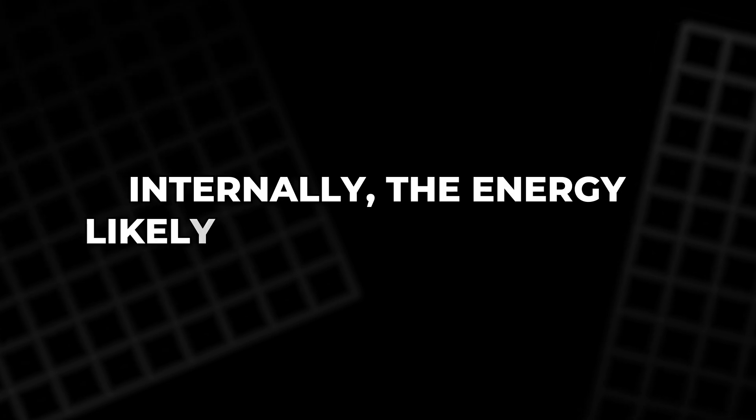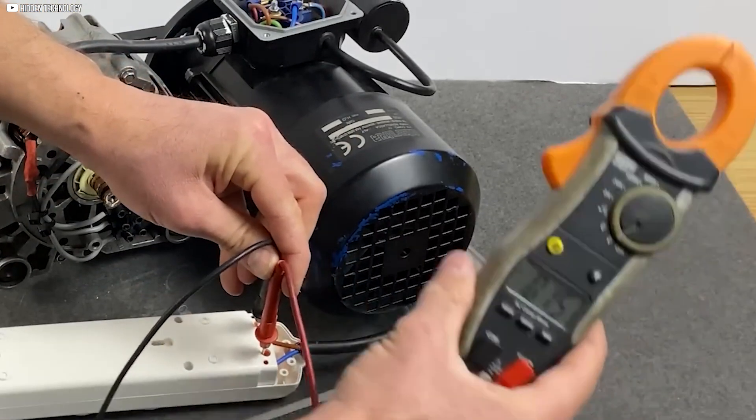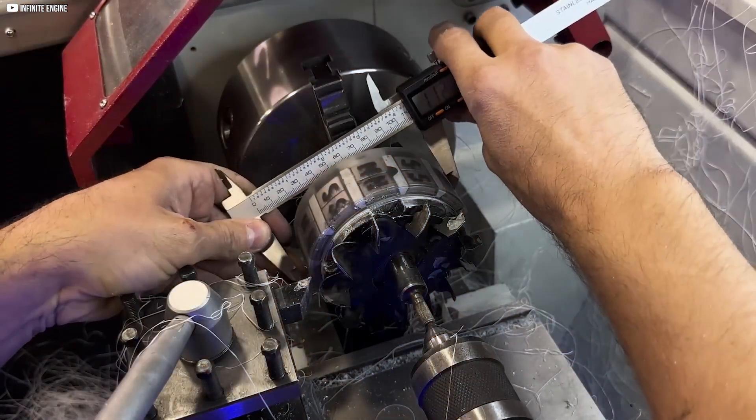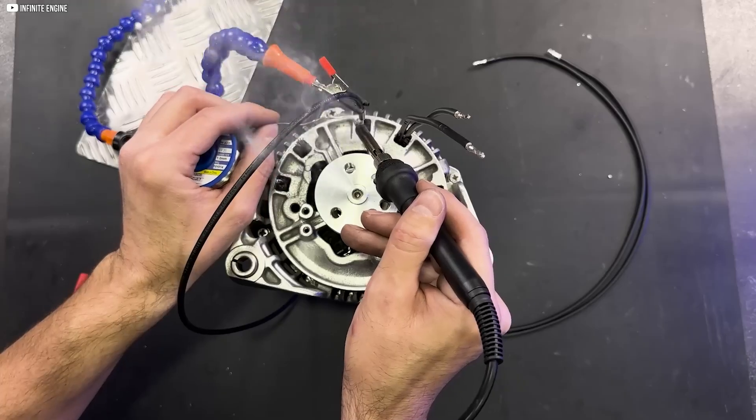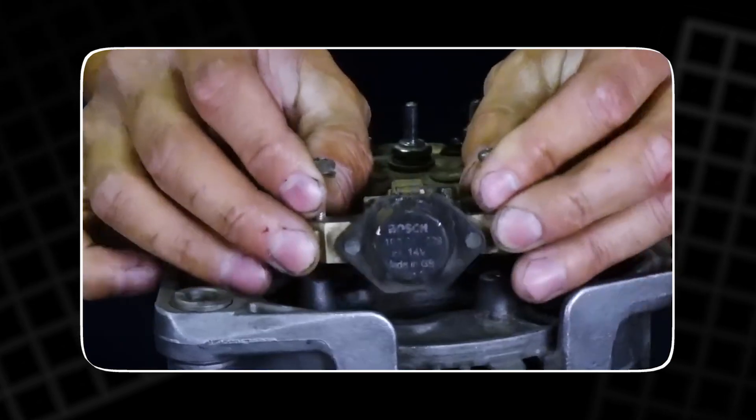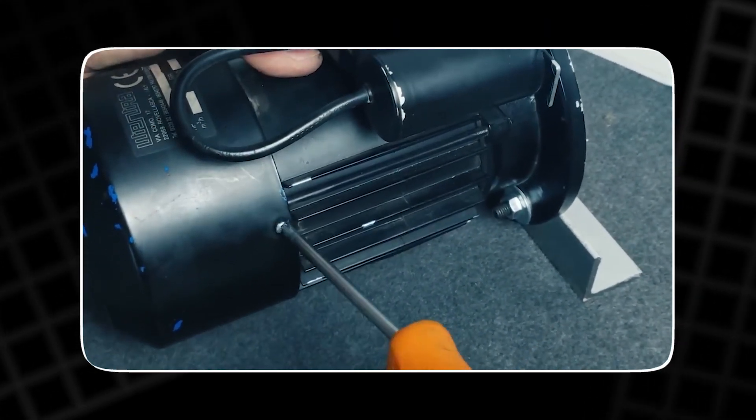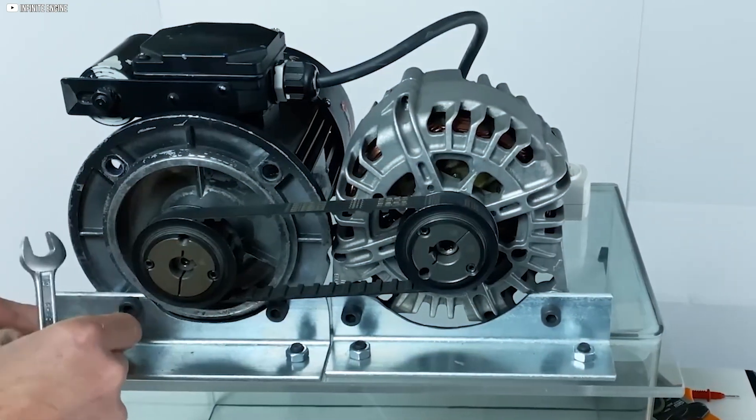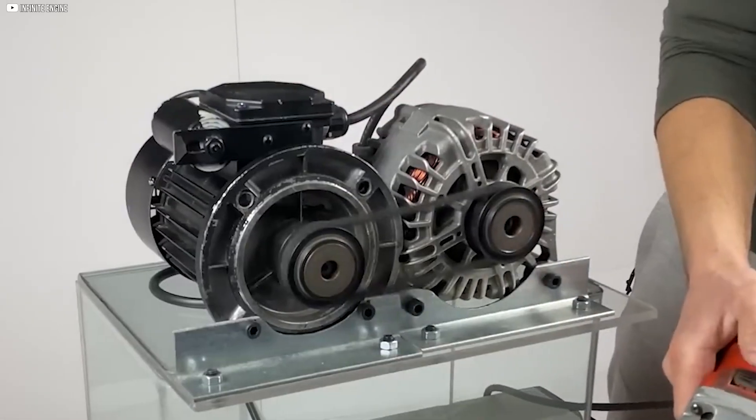Internally, the energy likely circulates in a loop, aided by the rotating magnetic field of the alternator. That field, combined with proper wiring and rotational force, is what allegedly keeps the system going. Yet, there's a layer of secrecy. The full motor specs are only available in the members-only video. Which leaves the public asking, what are they holding back? What's powering the rotation? And can it really sustain itself?